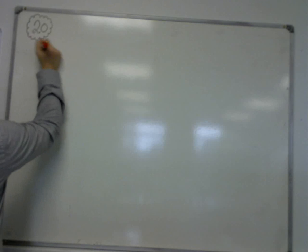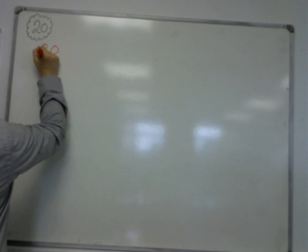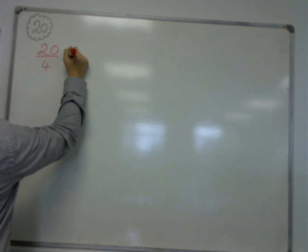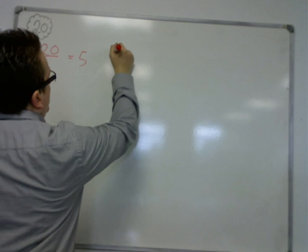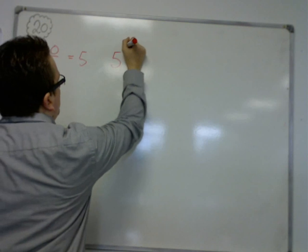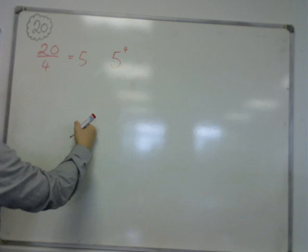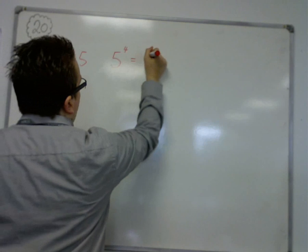But if we had 20 divided by 4, that's 5. And what we're going to do is we're going to find 5 to the power of the number of parts that you divided it by, 5 to the power of 4, which is 625.